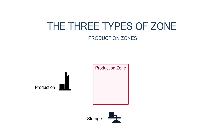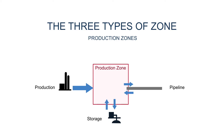At production zones, production facilities don't report their flows to separate pipelines. Instead, they report the total amount delivered to the relevant production zone. After the October 2016 rule change, pipelines also report their own deliveries and receipts at the production zone.